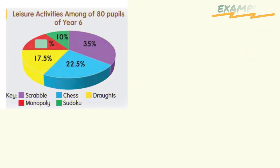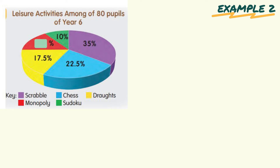Look at example 2. The pie chart shows leisure activities among 80 pupils of year 6. We have Scrabble, Chess, Draft, Monopoly, and Sudoku.